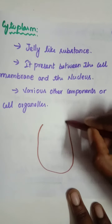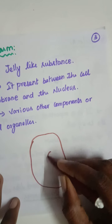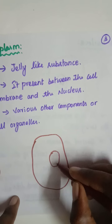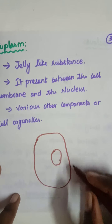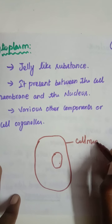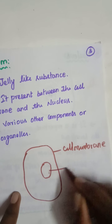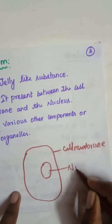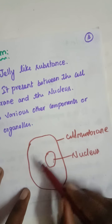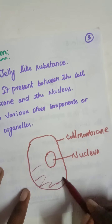Now, this is a cell. The nucleus is present and located in the center part of the cell. This is the cell membrane. This is the nucleus. The nucleus is the central structure within the cell.